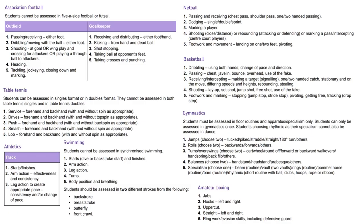This is where you choose which skills you're going to write about for this section. You can't change sports — it's got to be the same sport that you've already written about, you've already written your introduction for. If you've chosen football, for example, you can choose passing maybe as a strength and then it might be heading as your weakness. Whatever you think you can write more about, I would choose as your weakness.